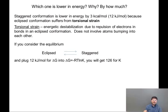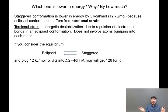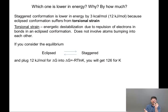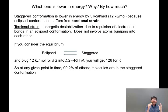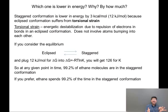If we consider the two conformations as being in equilibrium with each other, we can draw an equilibrium arrow between eclipsed and staggered and apply the equation ΔG = −RT ln K, plugging in 12 kilojoules per mole for ΔG. You will get a value of 126 for K, the equilibrium constant. That means that at any given point in time, 99.2% of ethane molecules are in the staggered conformation, or ethane spends 99.2% of its time in the staggered conformation.